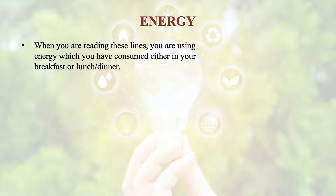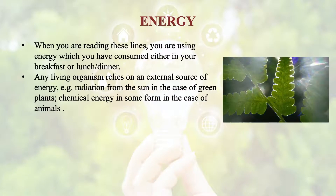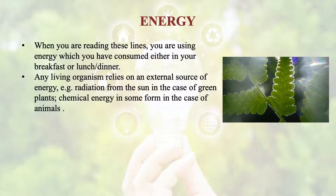You get this energy either from your breakfast, lunch, or dinner. Any living entity — either it is plant or animal — they are relying on an external source of energy. It comes in the form of radiation from the sun, in the case of green plants, with the help of which they prepare their food during the process of photosynthesis. For animals or for humans like us, we consume the chemical energy that is stored in the form of food.